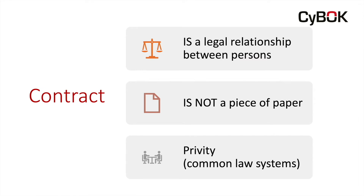Contract describes a legal relationship between persons. The simplest definition I've found is: a contract is a promise or series of promises that the law will enforce. Contract does not describe a piece of paper. This often causes confusion where people get focused on the paper, the signature. The contract is the relationship.